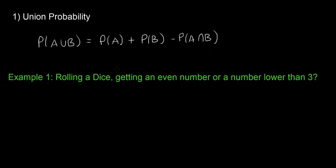Union probability is the first rule. It helps you find the probability of A or B — so if they ask you to find the probability of A or B happening, you can use this rule. The formula is: the probability of A or B equals the probability of A plus the probability of B minus the probability of A and B.